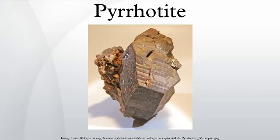Pyrrhotite is an iron sulfide mineral with the formula Fe(1-x)S. It is a non-stoichiometric variant of FeS, the mineral known as troilite. Pyrrhotite is also called magnetic pyrite, because the color is similar to pyrite and it is weakly magnetic.